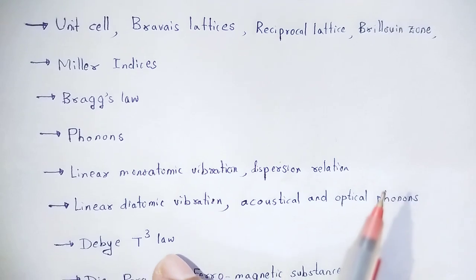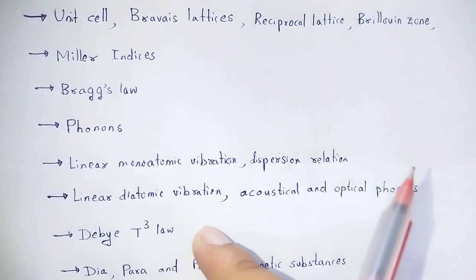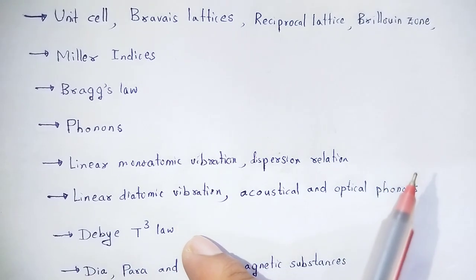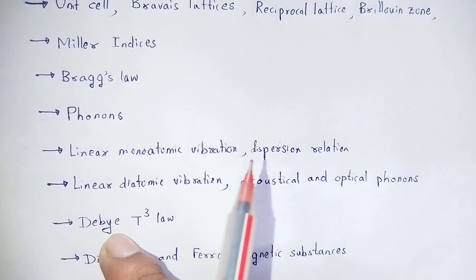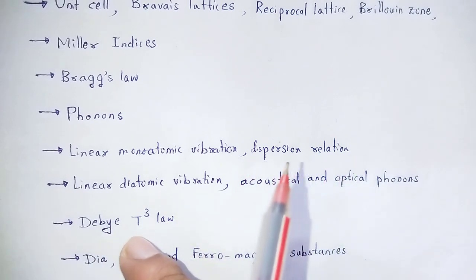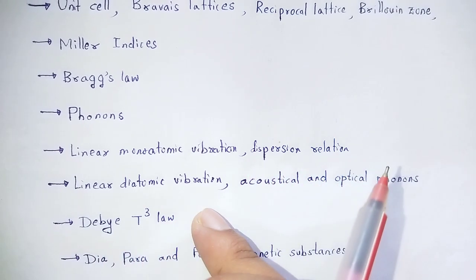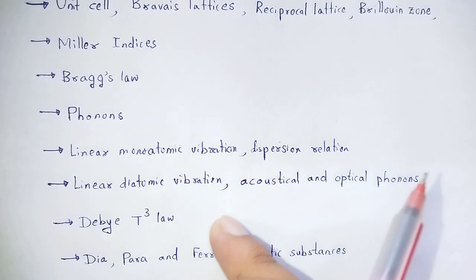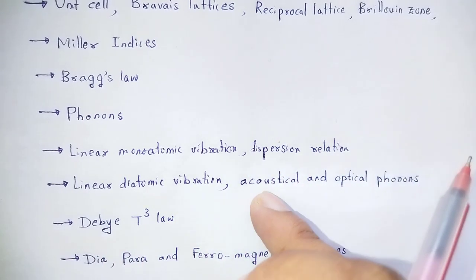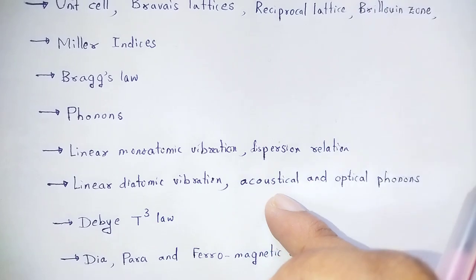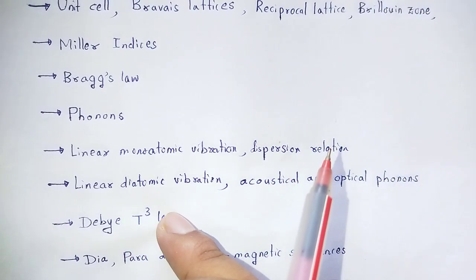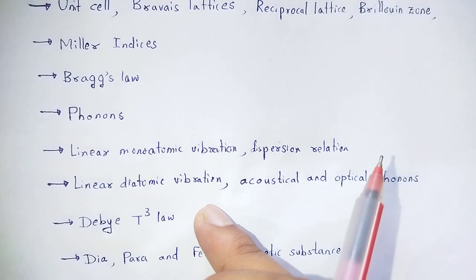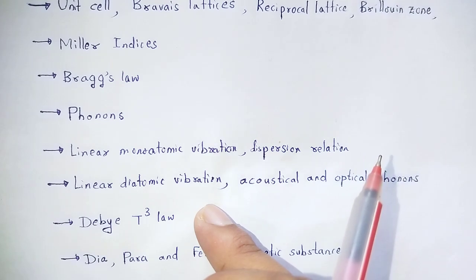I am going to tell you about the theory of specific heat — the Debye T-cubed law. Specific heat is directly proportional to the cube of temperature (T³). This is the key relation from the Debye T-cubed law.